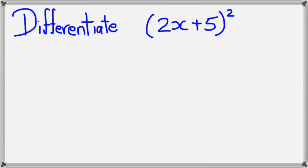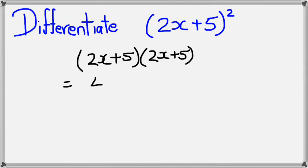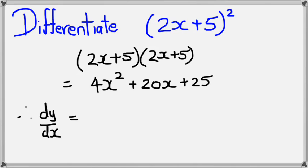Now let's say we want to differentiate this function here, 2x plus 5 squared. From our previous knowledge, the first thing we would do is expand this out. So we'd expand this as 2x plus 5 times 2x plus 5, and we would get 4x² plus 20x plus 25. And now we would differentiate this. So dy/dx would equal 8x plus 20.